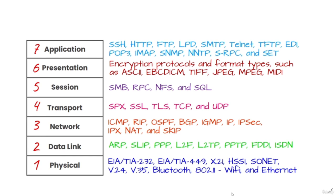The seventh layer is the application layer. At this layer, both the end user and the application layer interact directly with the software application. This layer sees network services provided to end user applications such as web browsers or Office 365. The application layer identifies communication partners, resource availability, and synchronizes communication.